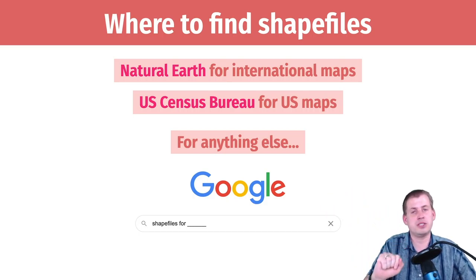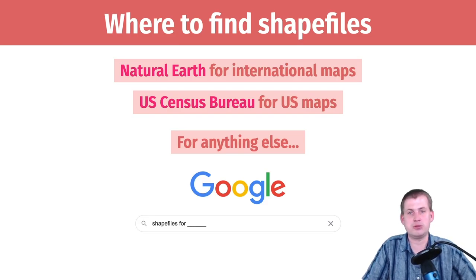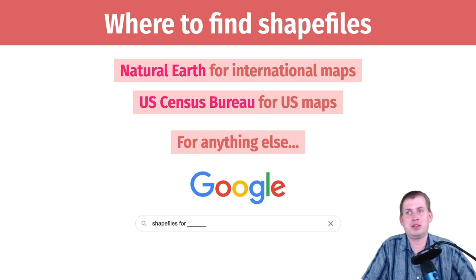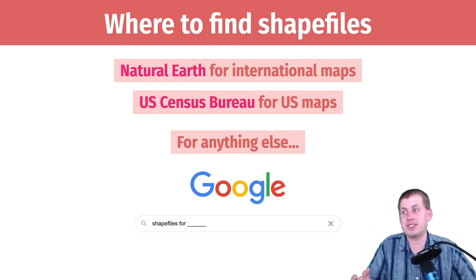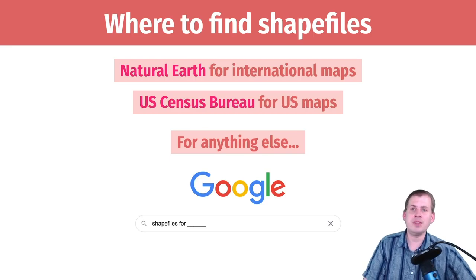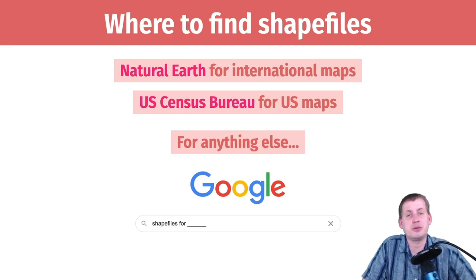For county-level shape files, most counties should provide those online; if they don't, their states should. A couple of you in your first mini project wanted to show a map of where all the rats were in New York City, and I told you to just Google 'New York City shape file.' You found different ones — New York State provides their own, New York City provides their own, and individual boroughs have their own specific shape files. Governments providing geographic data for free is a public service nowadays, so just Google it.